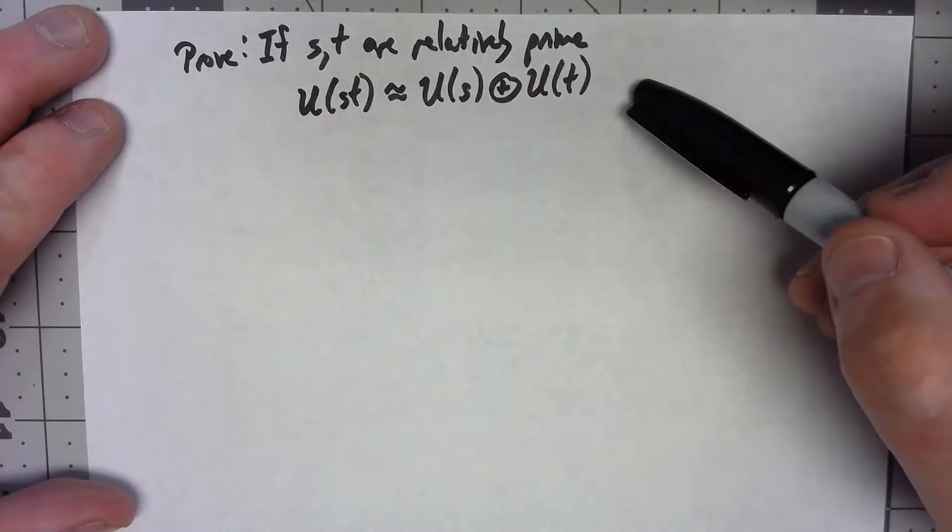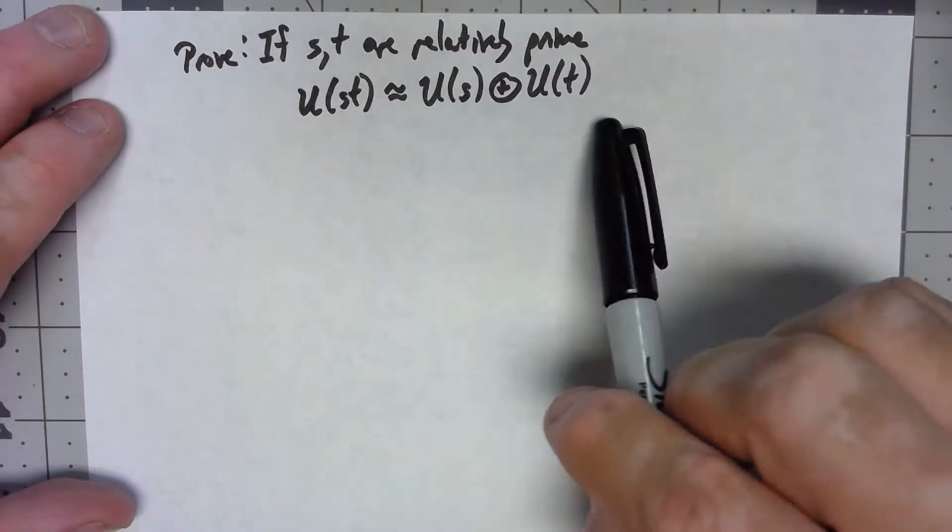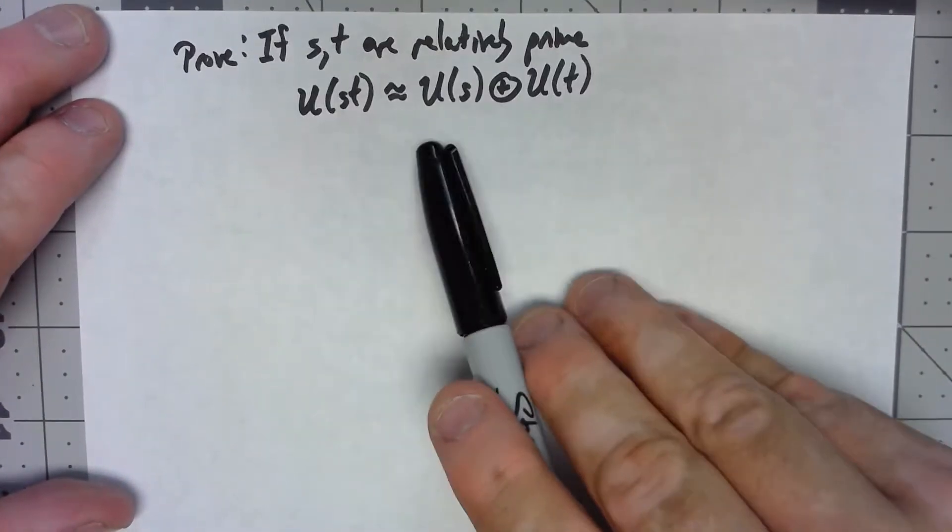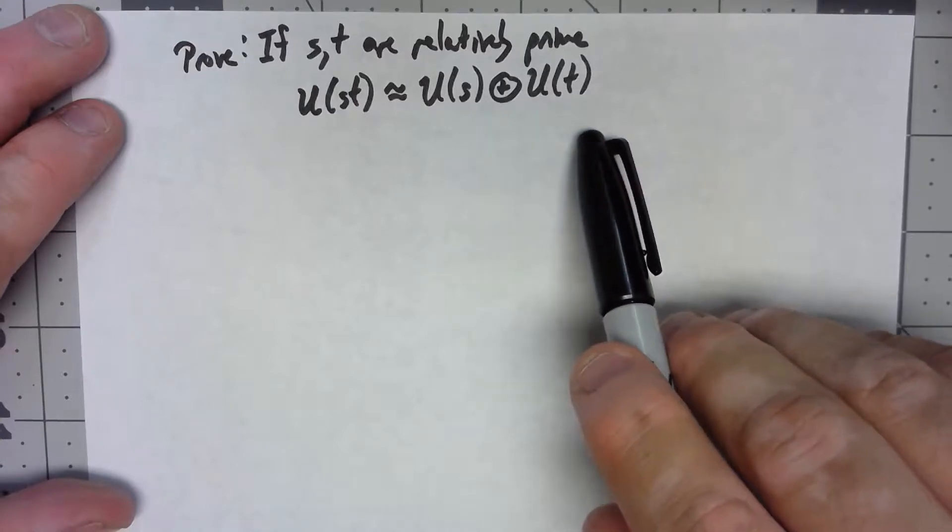We're only going to focus on the first one, but if s and t are relatively prime, U(st) is isomorphic to U(s) direct product with U(t).